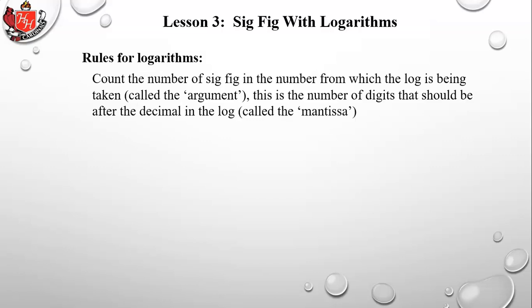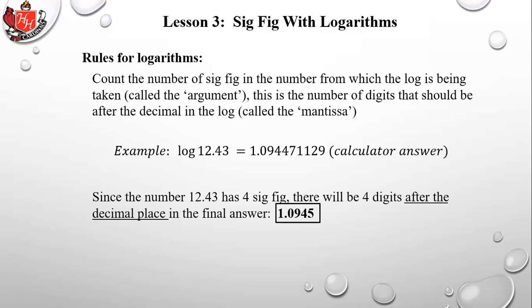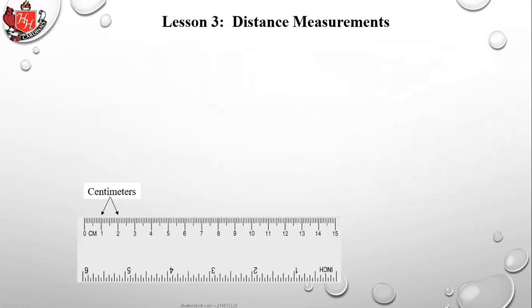Significant figures with logarithms: count the number of significant figures in the number whose log is being taken (called the argument) — that determines how many digits should appear after the decimal in the log result (called the mantissa). For example, log(12.43) gives a long decimal, but since 12.43 has four significant figures, the answer has four digits after the decimal: 1.0945.